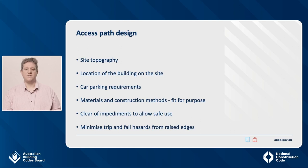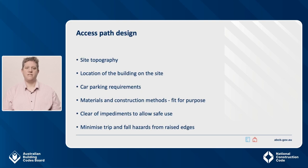The key aim for designers of access paths is to come up with a practical and safe step-free path design that makes the path accessible for all people regardless of their level of mobility. The design of the access path will be influenced by site topography, location of the building on the site and car parking requirements. You have flexibility in choosing the materials used to form the path. The main concern addressed by the standard is that the materials and construction methods are fit for purpose. A continuous access path needs to be clear of impediments to allow safe use — for example, avoiding objects that protrude onto the path such as bench posts or a letterbox. Where ramps are used, care should be taken to minimise trip and fall hazards from raised edges.